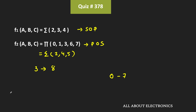Now, whenever we do the AND operation of functions f1 and f2, it will contain the minterms which are present in both functions f1 and f2. In this case, as you can see, those two common minterms are 2 and 4. That means for these two minterms only, the AND operation of f1 and f2 will be equal to 1. In other words, for the input combinations corresponding to these two minterms only, the output of f1·f2 will be equal to 1.